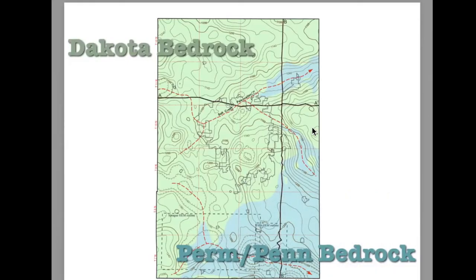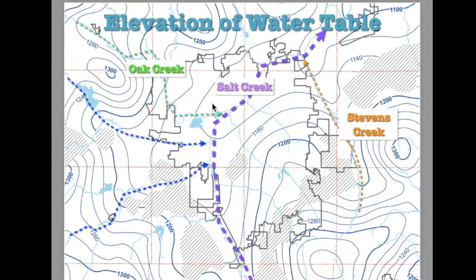These are the different bedrocks in Lancaster County, with Lincoln in the middle as a reference. The elevation of the water table in Lancaster County — this gray jagged line is the City of Lincoln. The blue lines are the water table elevation, labeled so if you were to dig down, theoretically at 1,200 feet you should find water. The creeks are labeled: the purple dashed line is Salt Creek, the green line is Oak Creek, and Stevens Creek is over here.